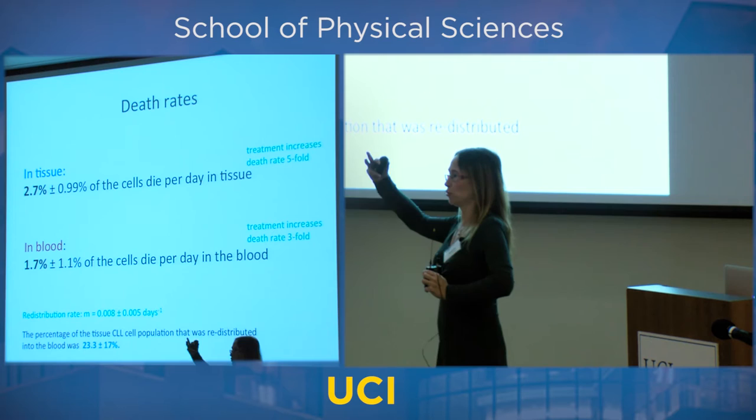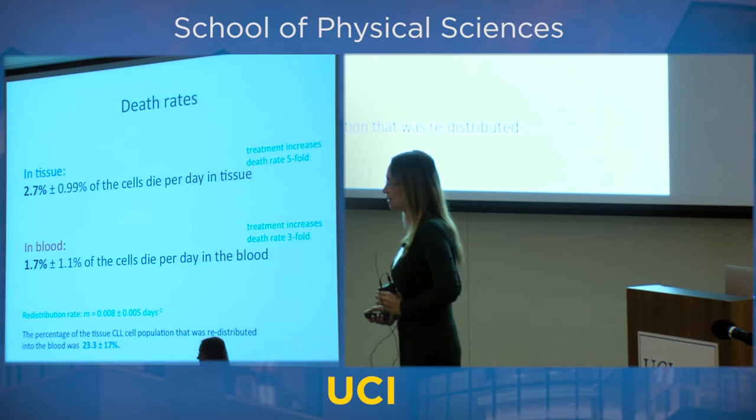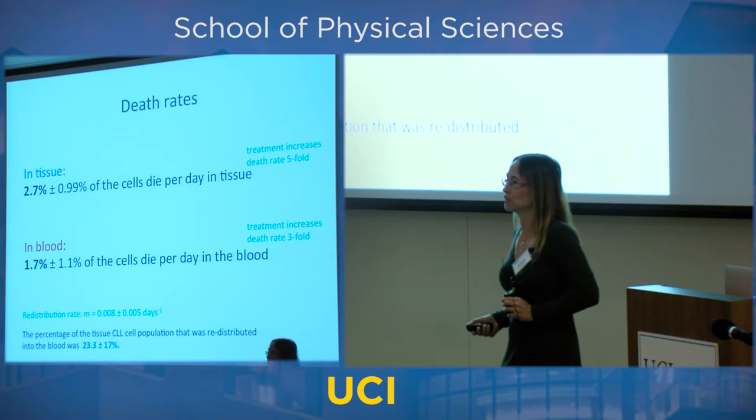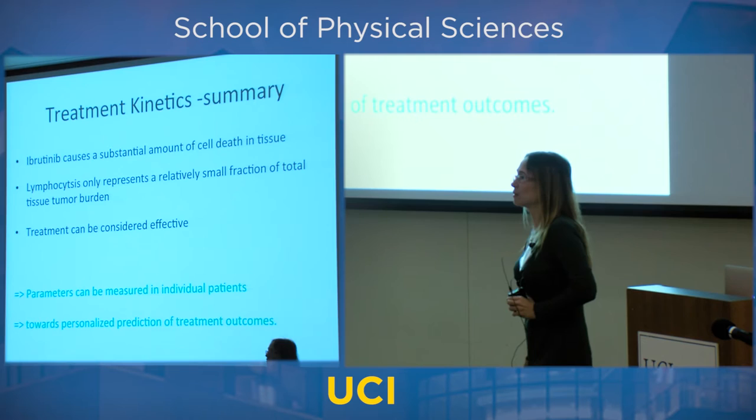The migration rate increases only a little — responsible for the temporary increase in blood cell counts — but really the biggest job the drug is doing is killing cells in the tissue. This was good, and this theory contributed to the FDA approval of the drug when it finally happened in 2015, because it allowed us to understand what the drug is actually doing.